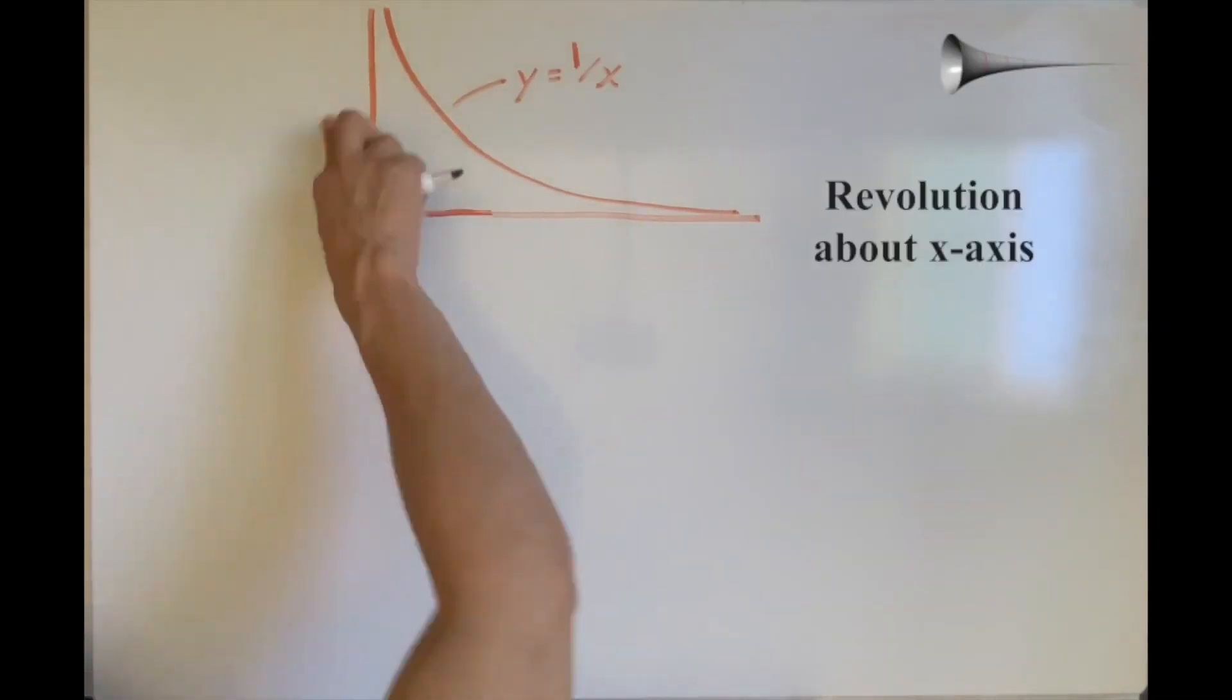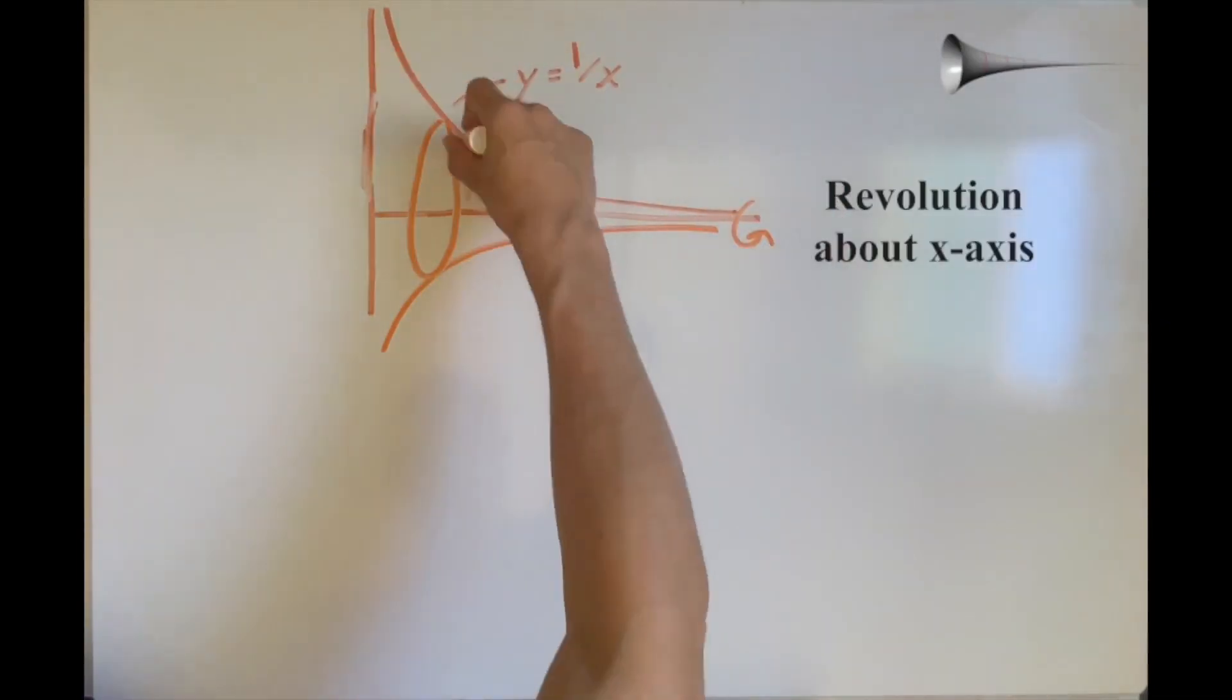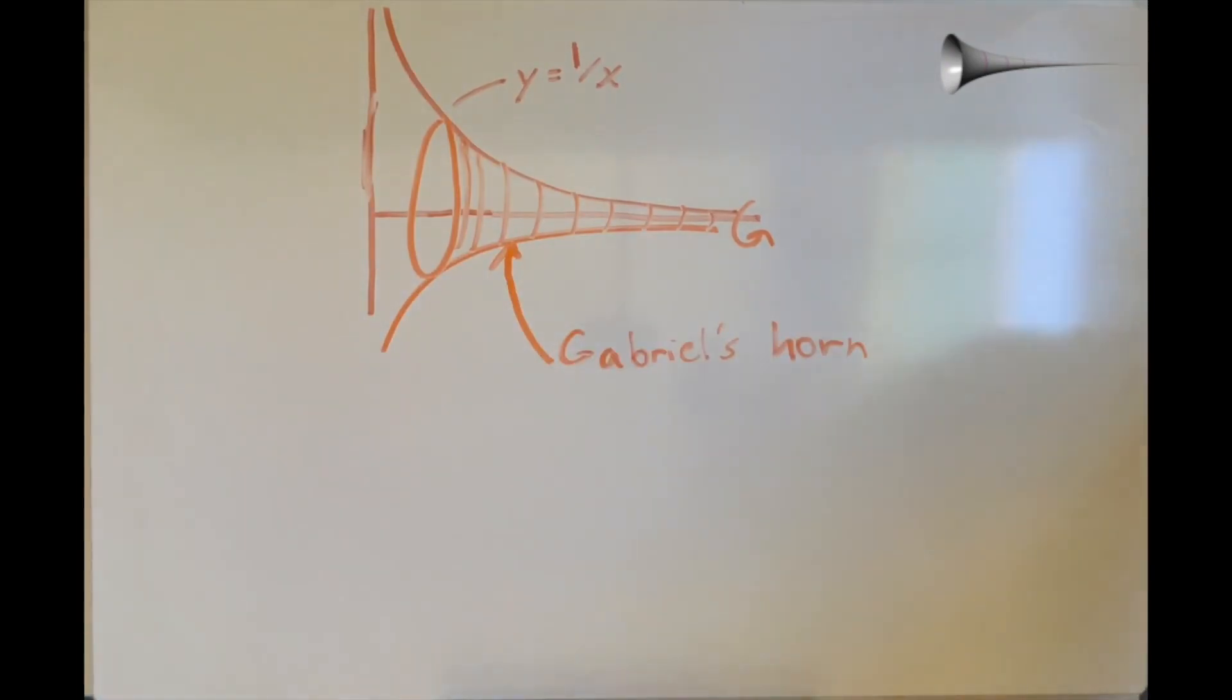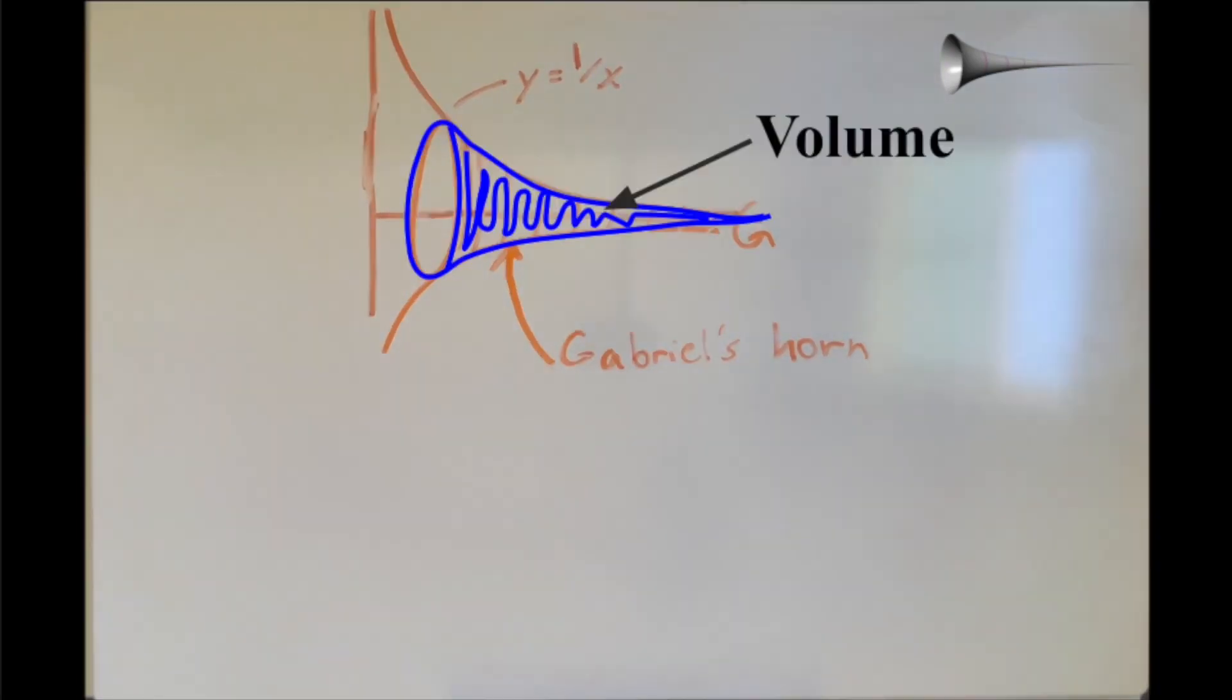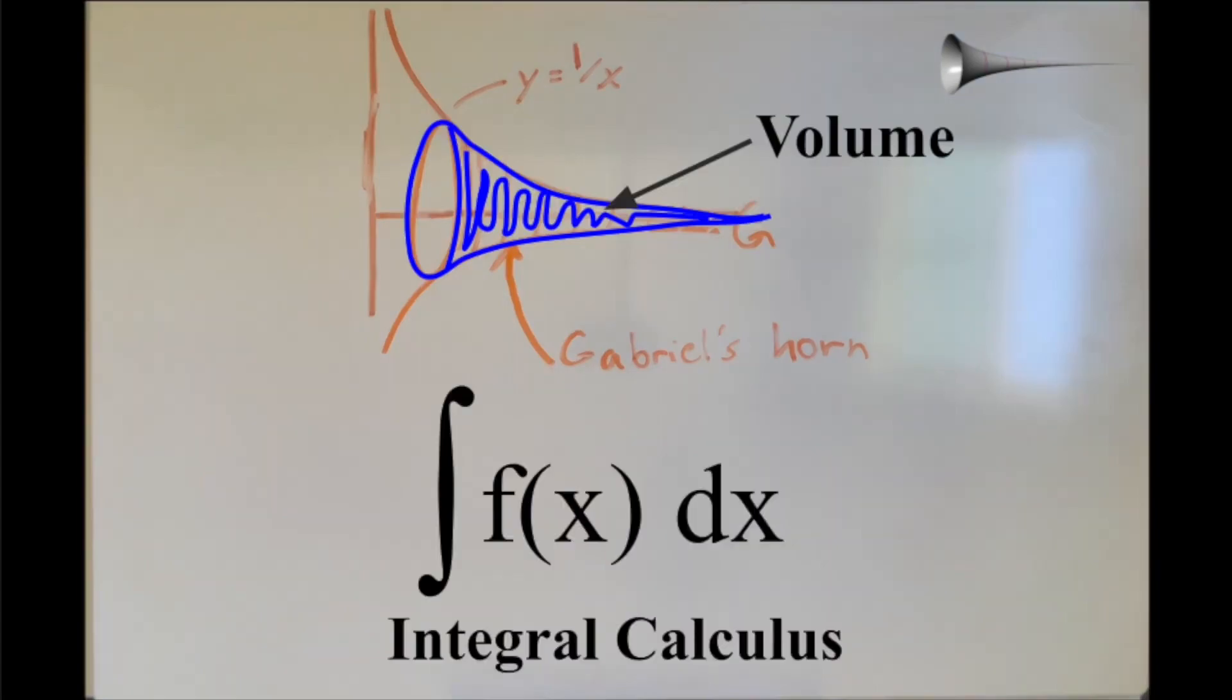Gabriel's horn is a special shape formed by revolving the function y equals 1 over x about the x-axis. To determine whether we can fit a pi in it or not, we need to find its volume, and we're going to use some integral calculus to do so.